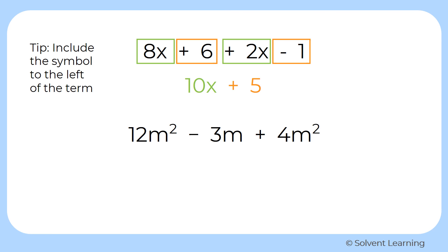Let's look at one more example. 12m squared minus 3m plus 4m squared. Now this time we have three terms.